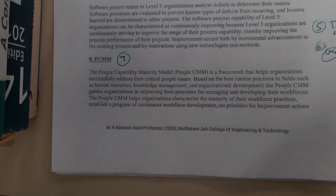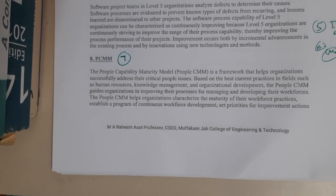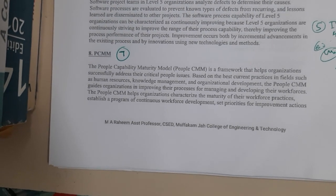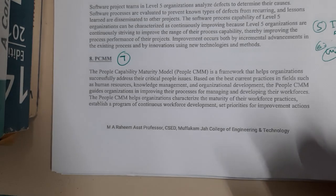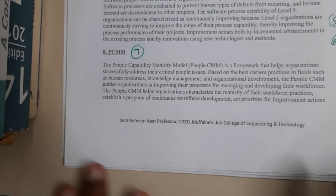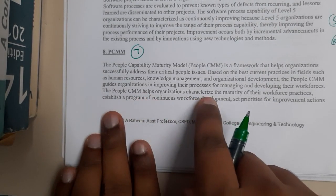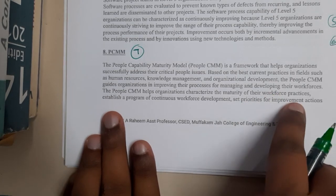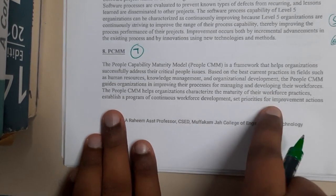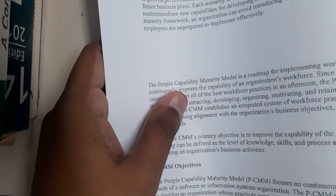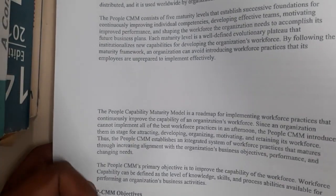So I hope everyone got some basic idea about PCMM. I tried to search for proper notes from reliable websites but the available notes weren't very clear. The People CMM helps organizations categorize the maturity of their workforce practices, establish programs for continuously developing the workforce, and set priorities for improvement actions.